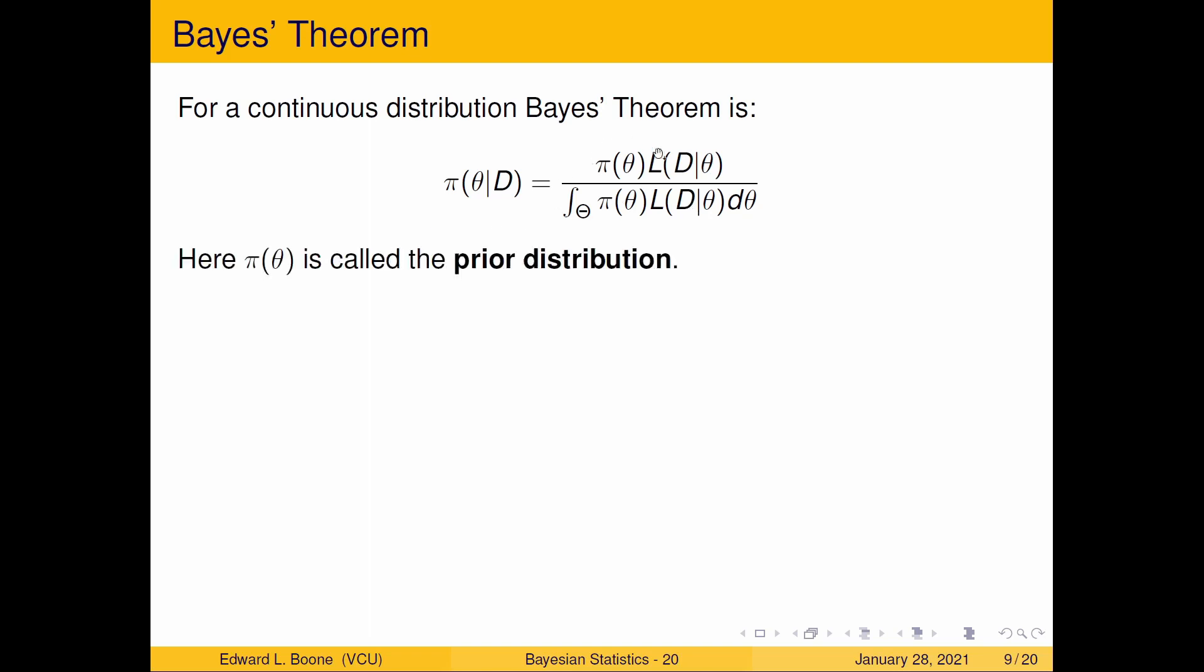Here, our π(θ) is going to be called the prior distribution. π(θ|D) is called the posterior distribution, because it's given the data. It's before we have any data, one is after we have any data, which is why I haven't showed you any data yet, because we now have the prior distribution. This is the formula for the posterior distribution.